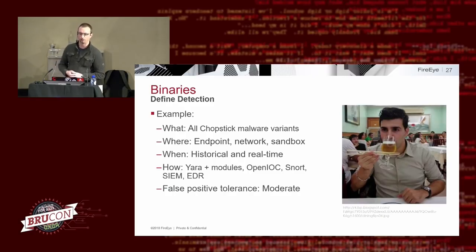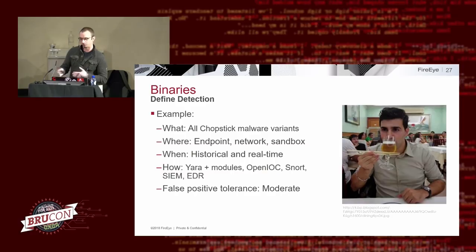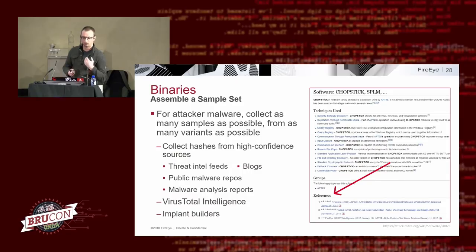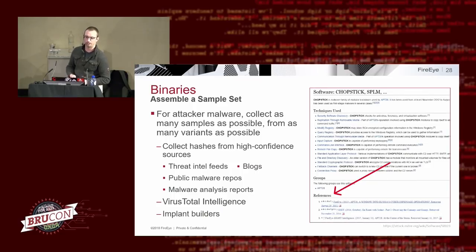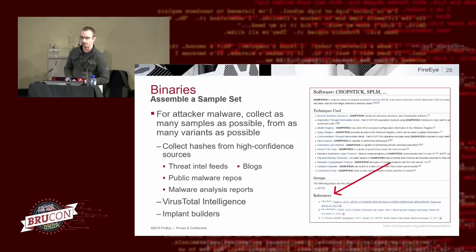An example of defining a detection: find all Chopstick malware variants — all of them, all generations — on endpoint, network, and sandbox, historical and real-time, using YARA plus the PE module, OpenIOC, Snort, SIEM, and EDR, with moderate false positive tolerance. The next step is to go find sample sets. At FireEye we have an incredible amount of malware and intelligence, but even with that we still validate we've gotten all good open-source intelligence applicable to whatever threat we're looking at.